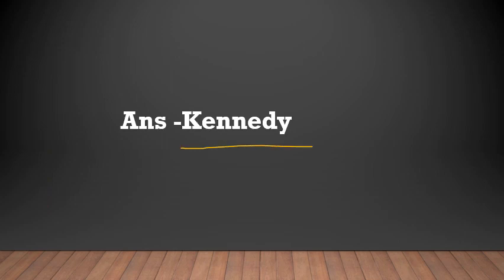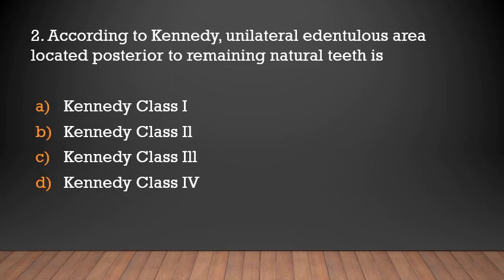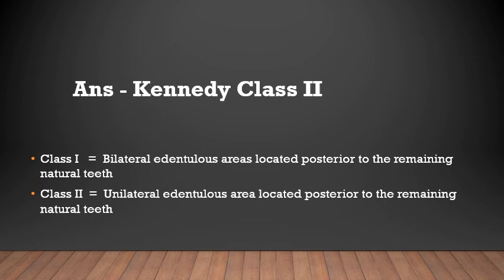According to Kennedy's classification, Class 1 is characterized by bilateral edentulous areas located posterior to the remaining natural teeth, and Class 2 is characterized by a unilateral edentulous area located posterior to the remaining natural teeth.